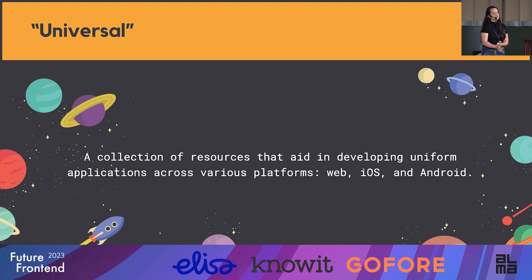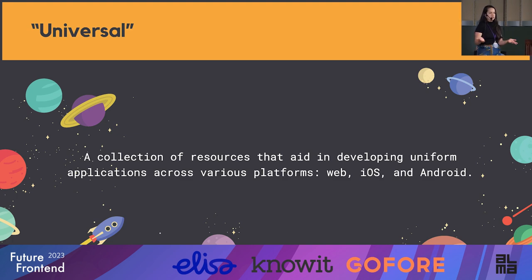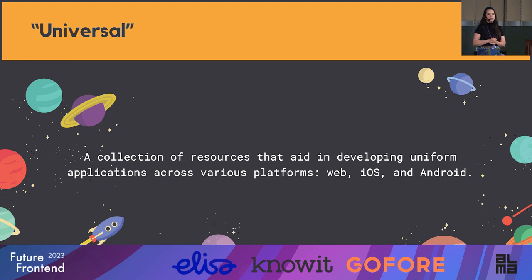What do I mean by universal? I'd like to define it as a collection of resources that aid in developing a uniform application across various platforms — web, iOS, and Android. Mo explained his perspective, where it could be a shared code base that lets you apply the same application across all these platforms. From a designer's perspective, it means I want the applications to look and feel similar across these platforms. I'm more prone to using native platforms to build the code, so I wouldn't go for something like React Native — I would build natively on iOS and Android.